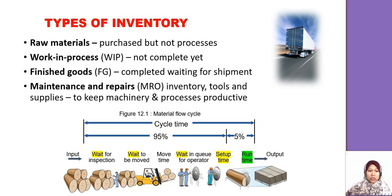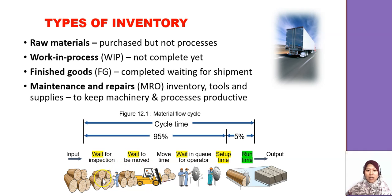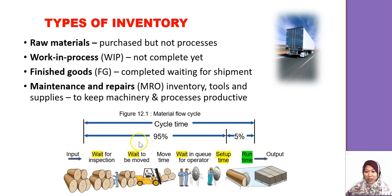If you look at this figure, it shows that most of the process involves waiting — waiting for inspection, waiting to be moved — and all of this we consider as work-in-process inventory. Actually, the working or processing part is only 5%; 95% is mostly waiting, and we call that WIP.